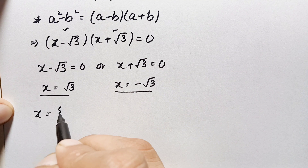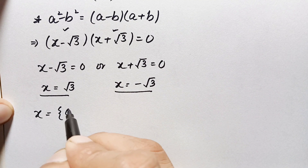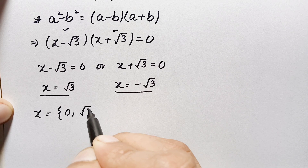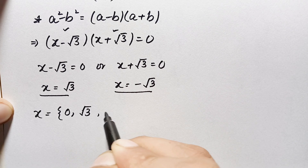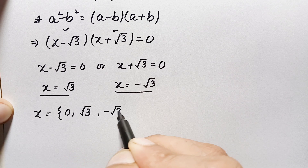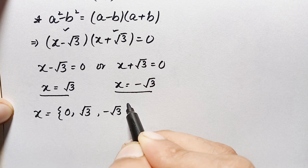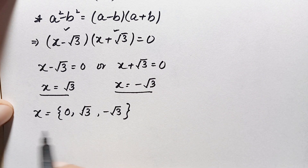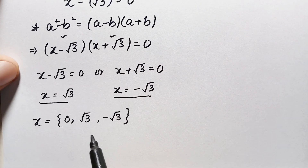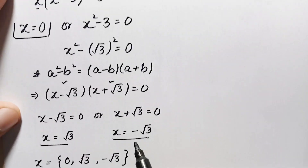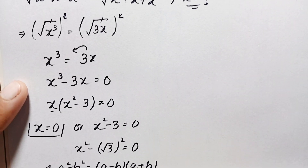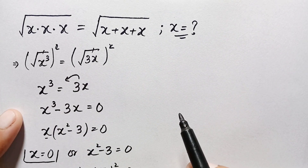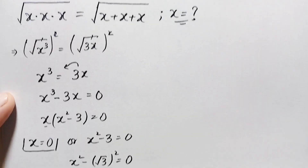The three solutions are x equals 0, x equals positive √3, and x equals negative √3. Now we will verify that these are the exact and correct values of x in this interesting algebra square root problem.